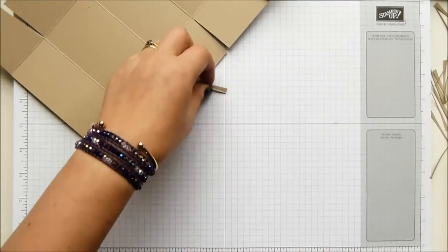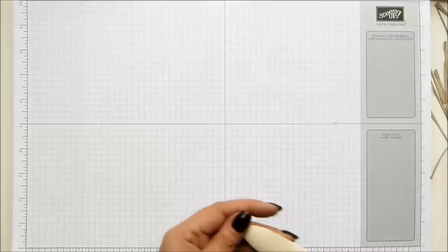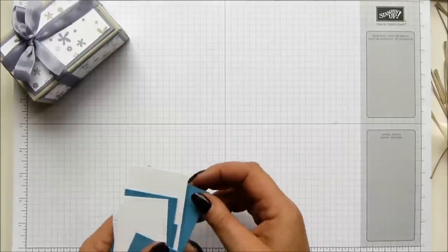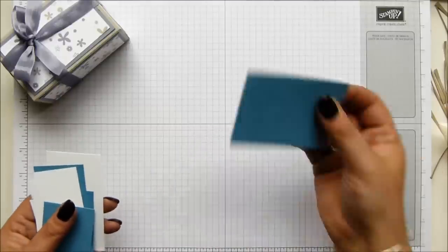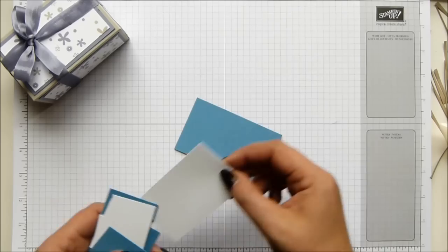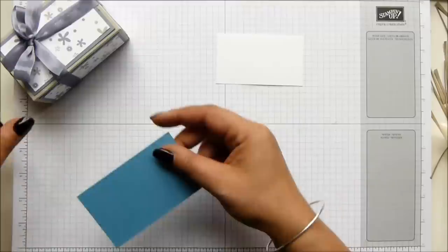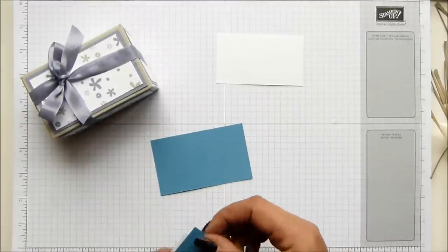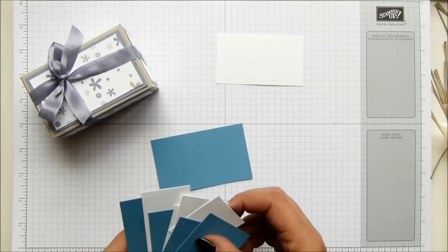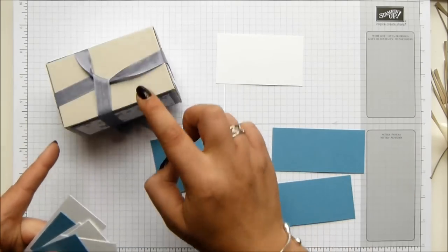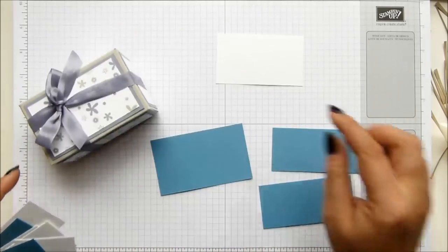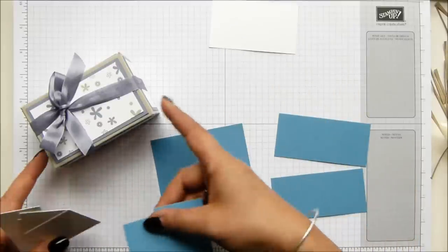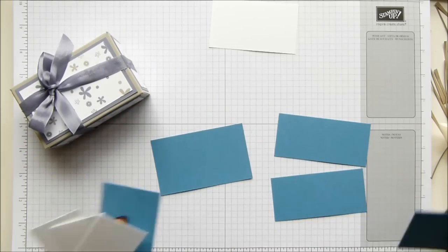So I need to put that to one side to then give all of the measurements for everything else. So my original box was Sahara Sand with Wisteria Wonder and then Whisper White on top. So you need one piece for the top that measures three and three quarters by two and a quarter, which is nine and a half by six. Like I say, don't worry about writing these down. I'll give them to you anyway. Two for the front and back that are three and three quarters by one and three quarters, so nine and a half by four. And then you need two for the sides, which are one and three quarters by two and a quarter.